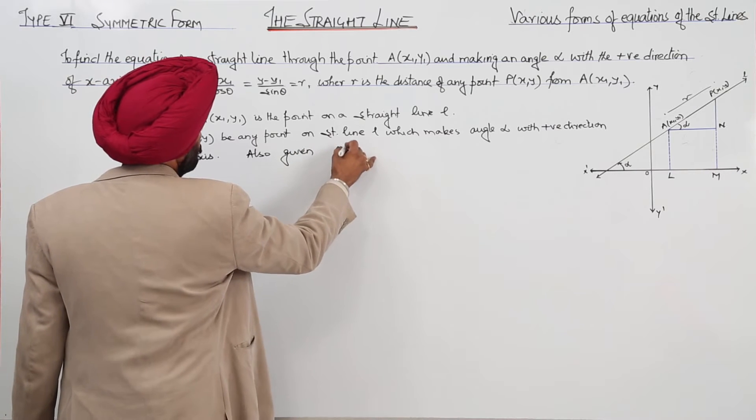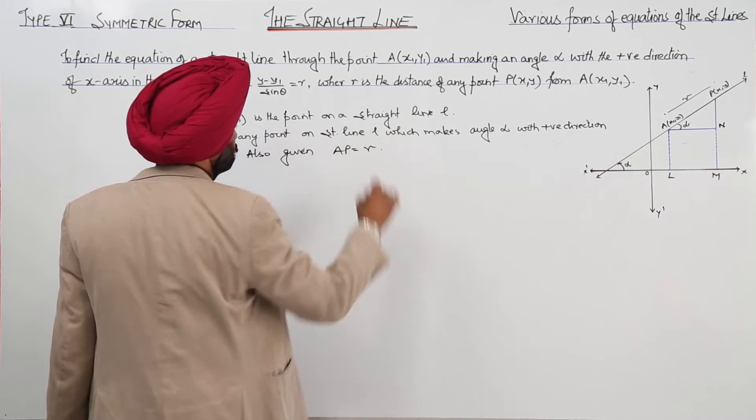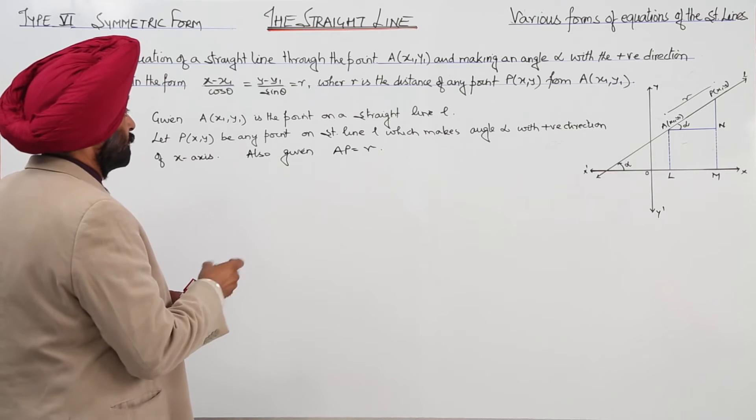With x-axis and also given A at x1, y1, and given AP is equal to r. This is given.